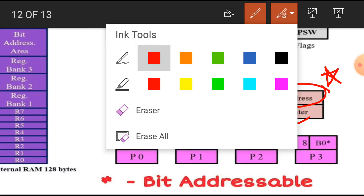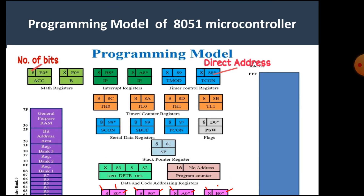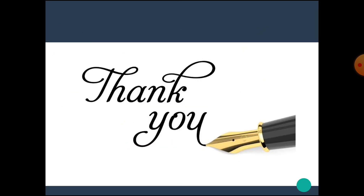The 8051 microcontroller has four ports: P0, P1, P2, and P3. Each port is 8-bit and can be used as both bit addressable and byte addressable. The internal RAM addresses are: P0 at 80H, P1 at 90H, P2 at A0H, and P3 at B0H. I hope you all understand the programming model of the 8051 microcontroller.